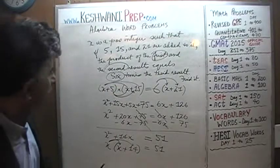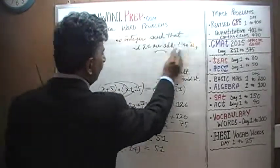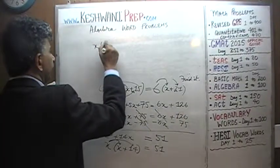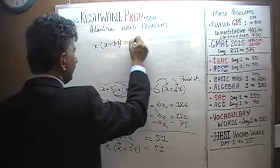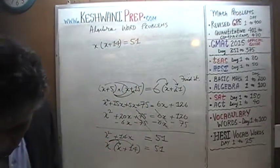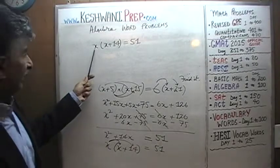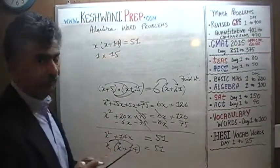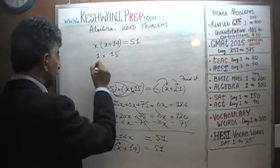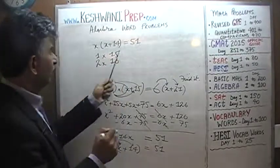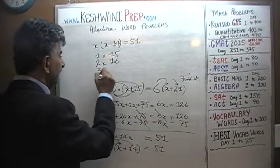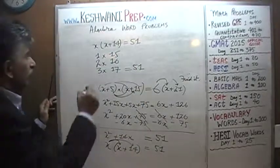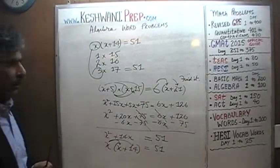We have x times (x+14) equals 51, and x is a positive integer. Testing: x=1 gives 1 times 15 = 15, not 51. x=2 gives 2 times 16 = 32, not 51. x=3 gives 3 times 17 = 51. There is your answer — x equals 3.